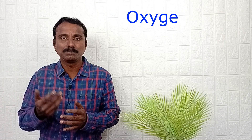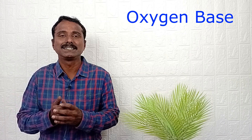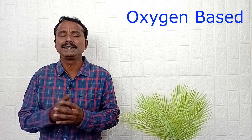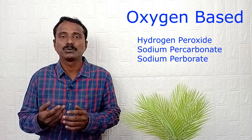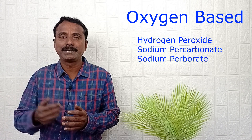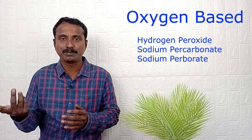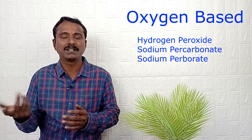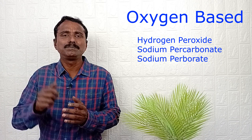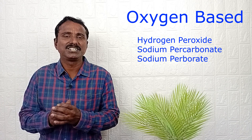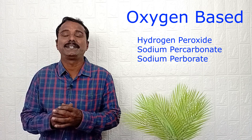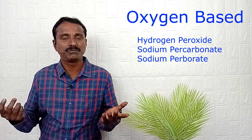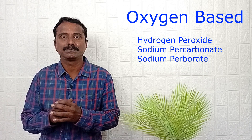In case of oxygen-based bleaching agents, the examples are sodium percarbonate, sodium perborate, etc. Oxygen-based bleaching agents are generally color-safe materials. We can use them for colored fabrics.